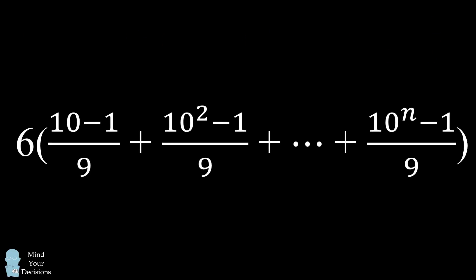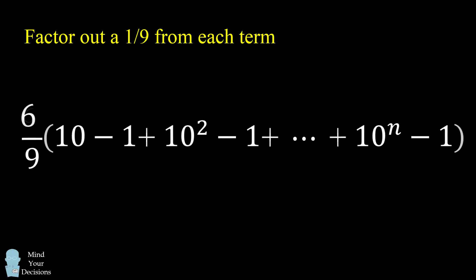Now what we can do with this term is that we can factor out a 1 ninth from each of the terms in the summation. So we have 6 ninths times the following summation. We have some powers of 10 being added together, and we have negative 1 in each of these groups.